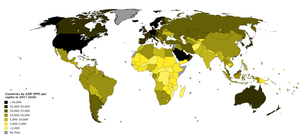The third way to estimate GDP is to calculate the sum of the final uses of goods and services measured in purchasers' prices. Market goods which are produced are purchased by someone. In the case where a good is produced and unsold, the standard accounting convention is that the producer has bought the good from themselves. Therefore, measuring the total expenditure used to buy things is a way of measuring production. This is known as the expenditure method of calculating GDP.